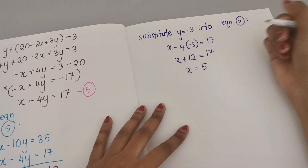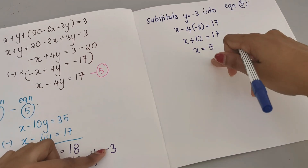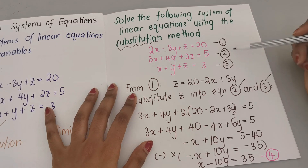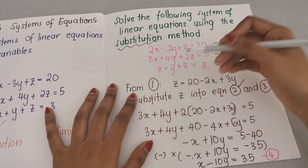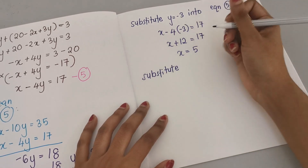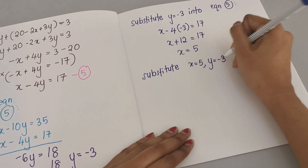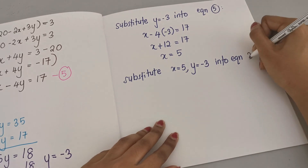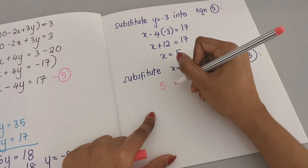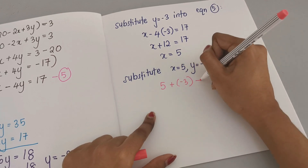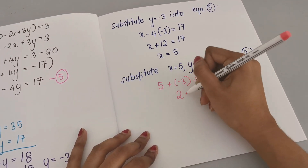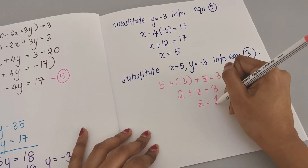We now have x and y, so substitute into any of the original equations to find z. I'll choose equation 3 since it's simple: x plus y plus z equals 3. Substituting x equals 5 and y equals negative 3: 5 plus negative 3 plus z equals 3, so 2 plus z equals 3, giving z equals 1.